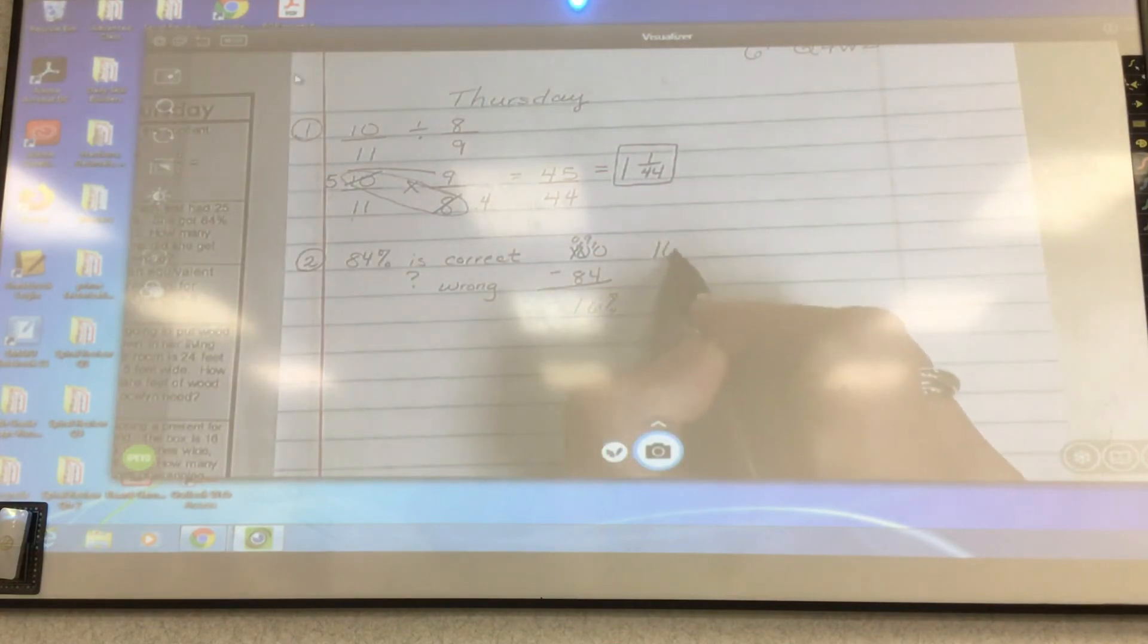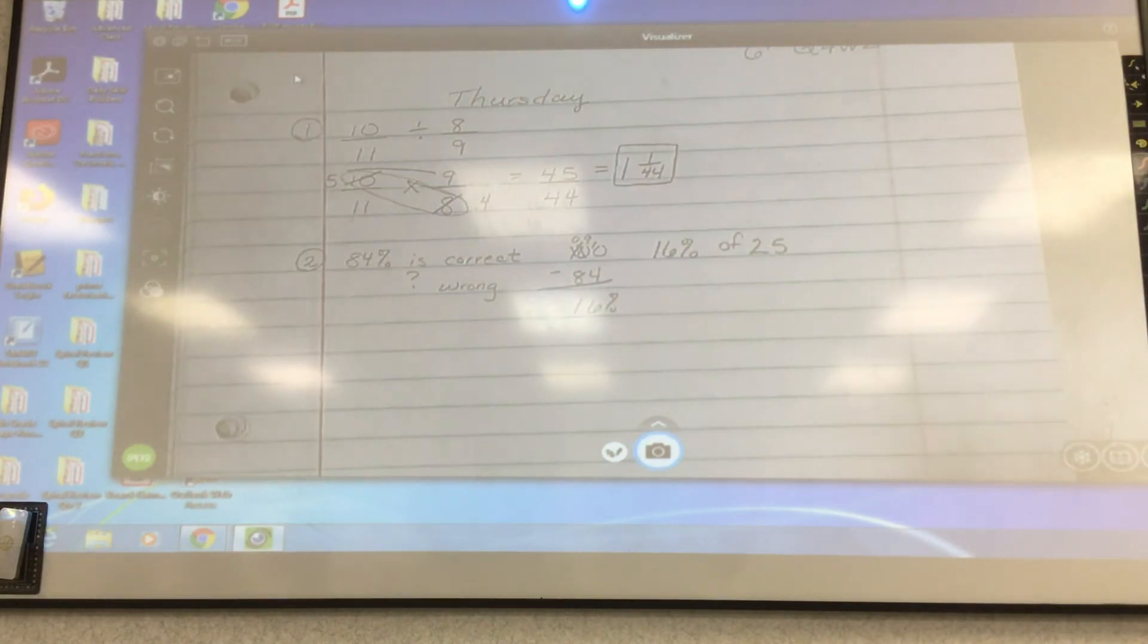But I need to find out how many that is. And here it says 25 questions. So I take 16% of 25. Now remember, there's two ways of showing this from this week. Of becomes multiplication. I can make 16% as a fraction. And whenever you make a percent a fraction, this number is always over 100. And then I have times 25/1. I'm going to reduce first by 25. So this becomes a 1. This becomes a 4. Then I multiply. 16 times 1 is 16. 4 times 1 is 4. Then I need to reduce this by saying 16 divided by 4 is 4. That's my final answer.